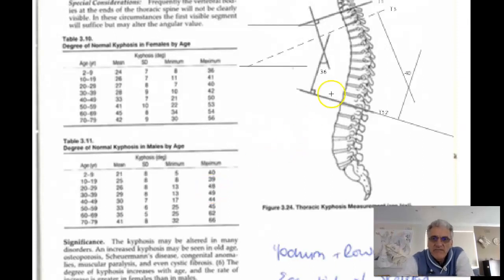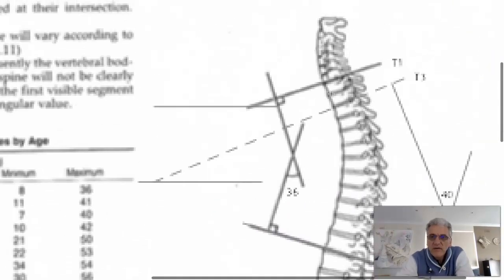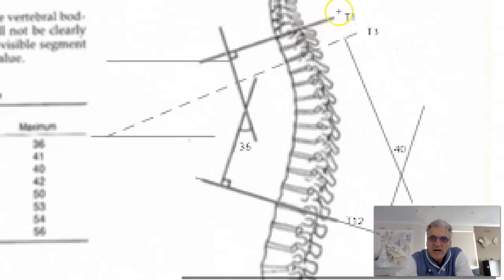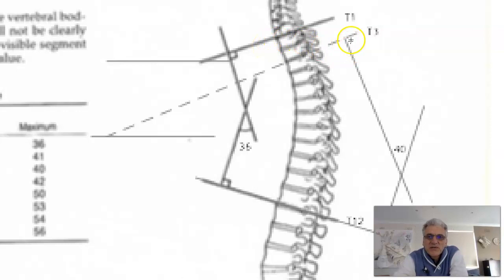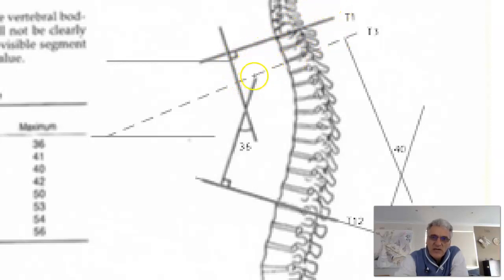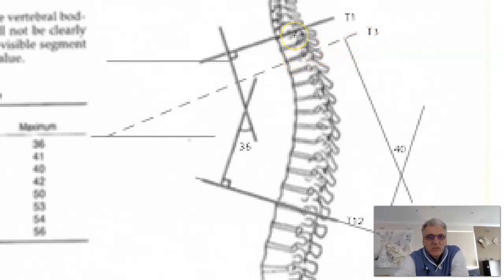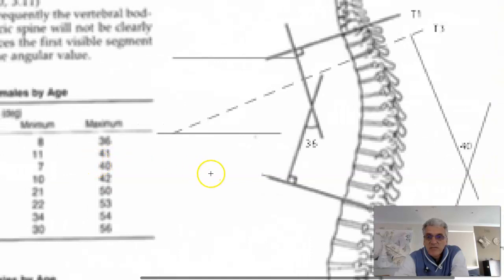Here on the X-ray I've constructed how they've done it — going from the top of T1. Sometimes you won't see T1, so you have to go down to T3. You'll see that the angle increases somewhat — that line is not as tilted as that one. So you add an extra 4 degrees to the T3 vertebra if you're measuring from T3 because you can't see T1. Add 4 degrees to all of those minimum and maximum values.